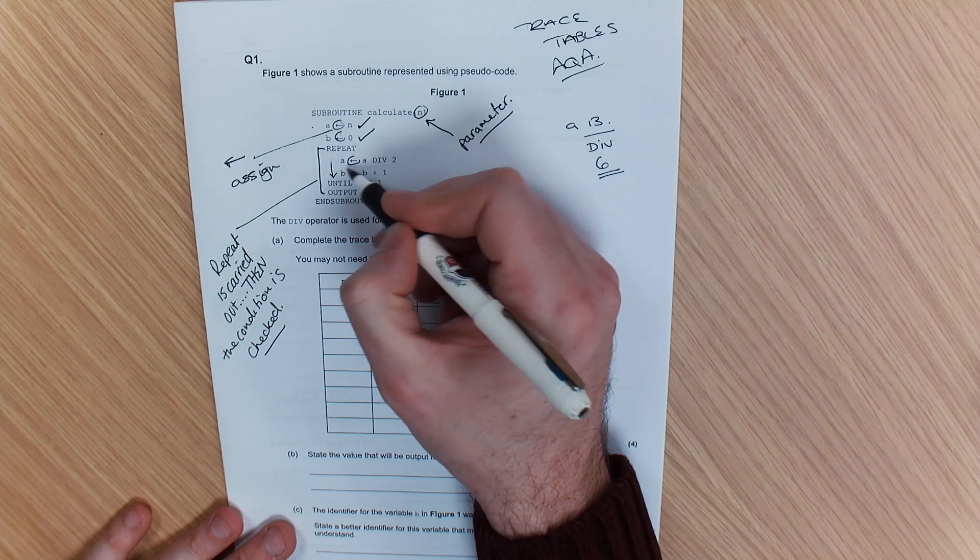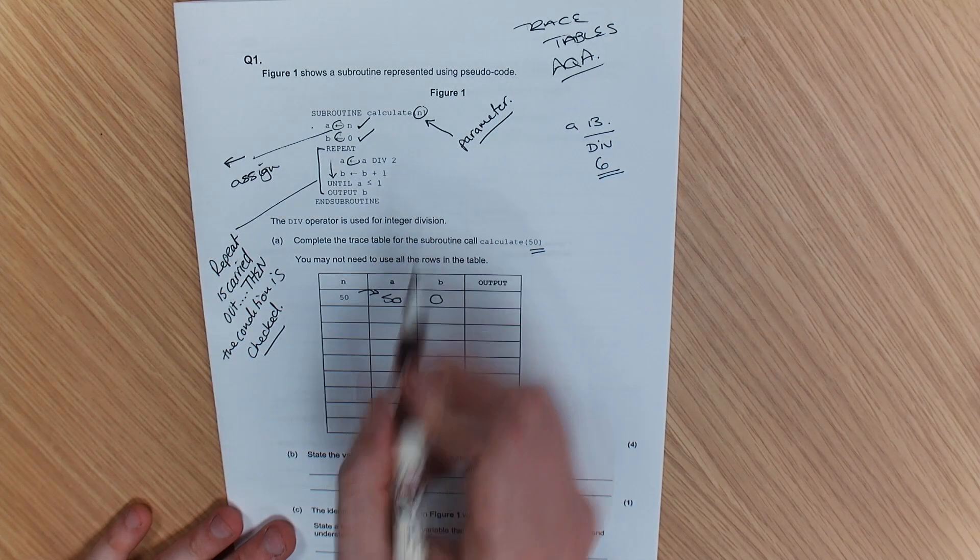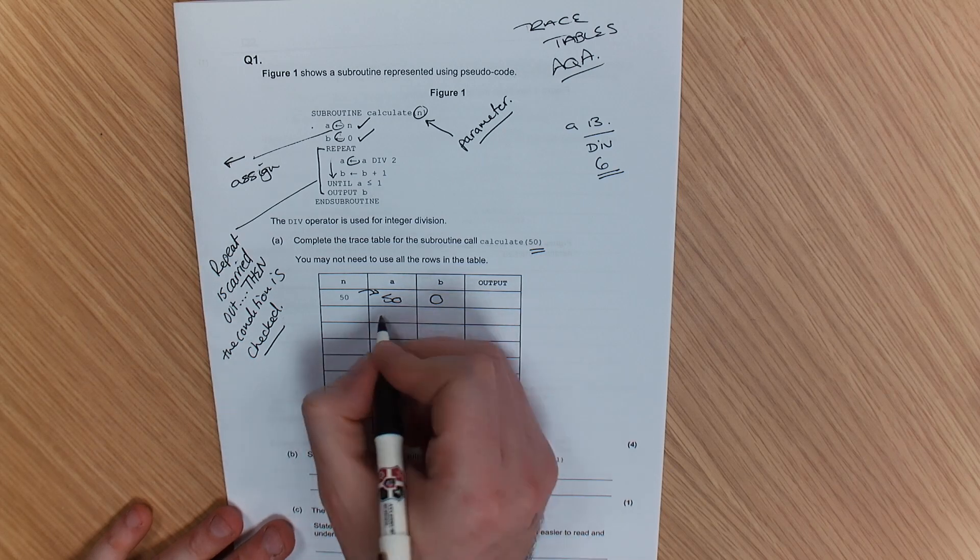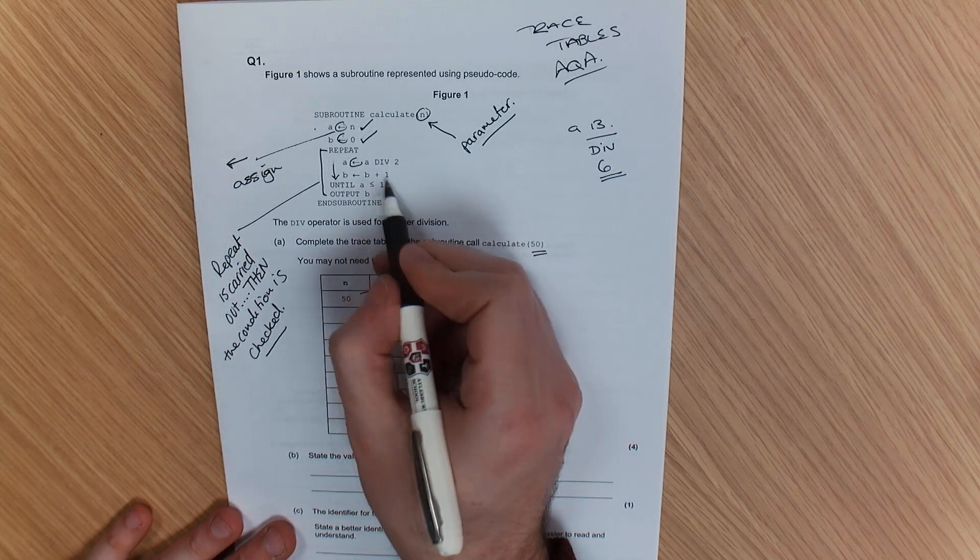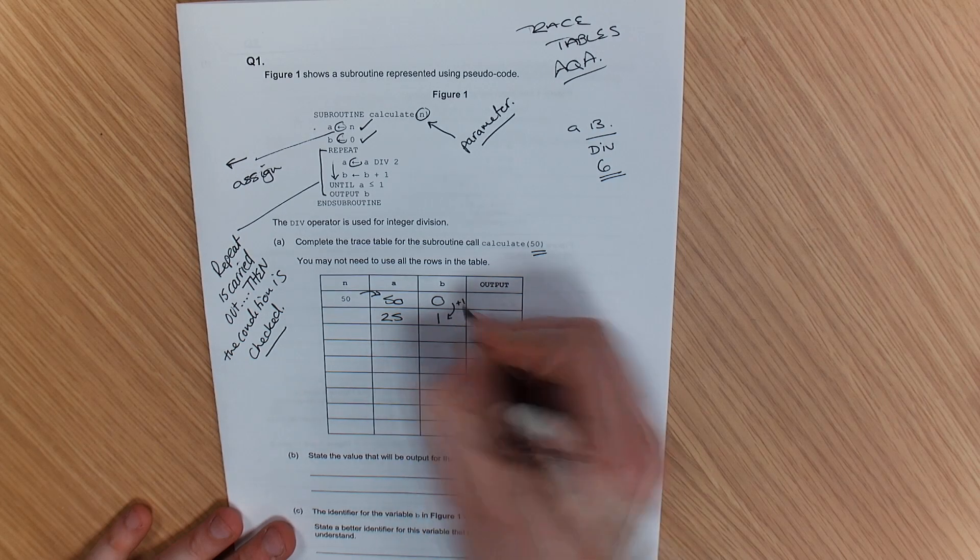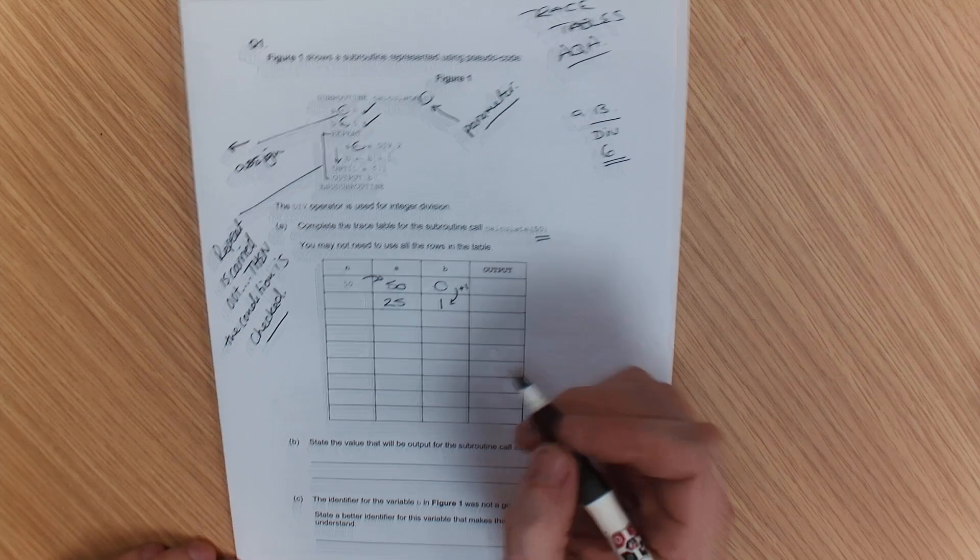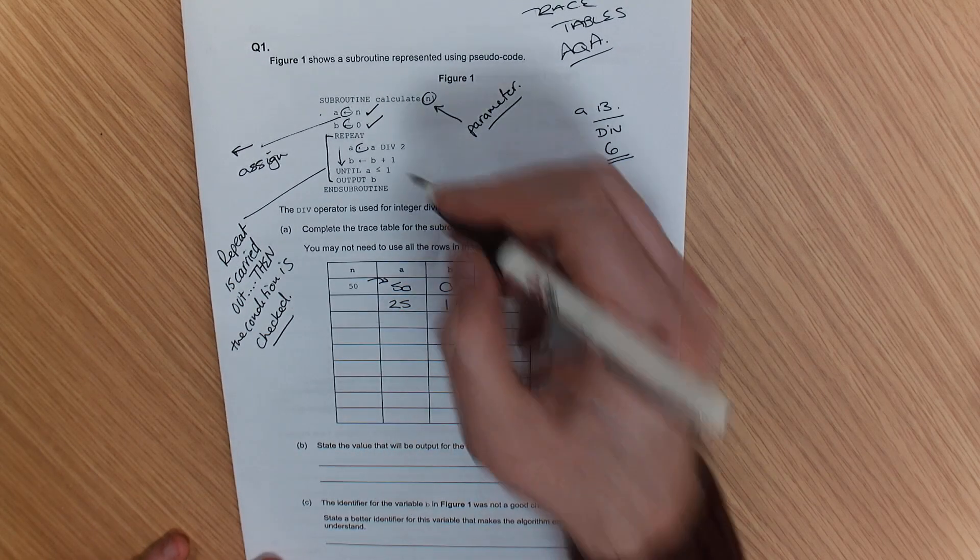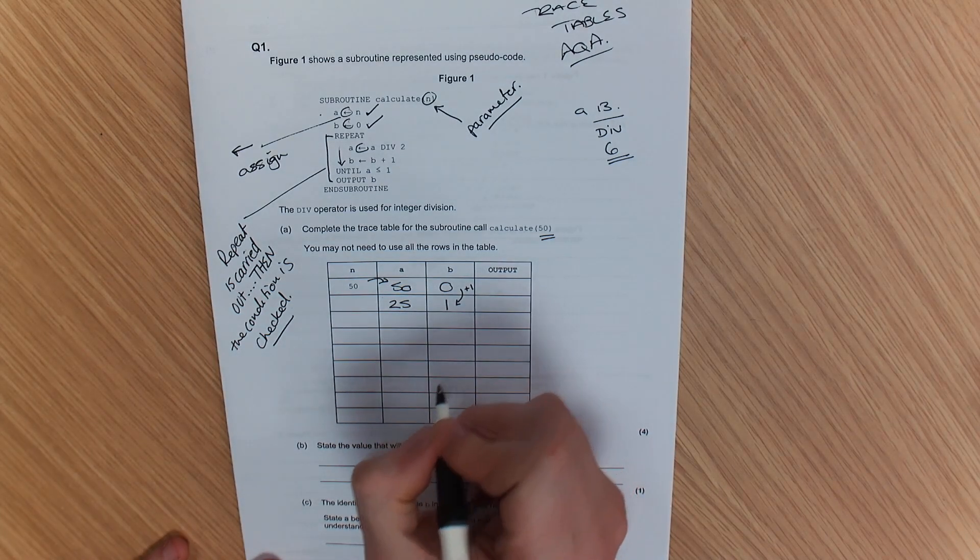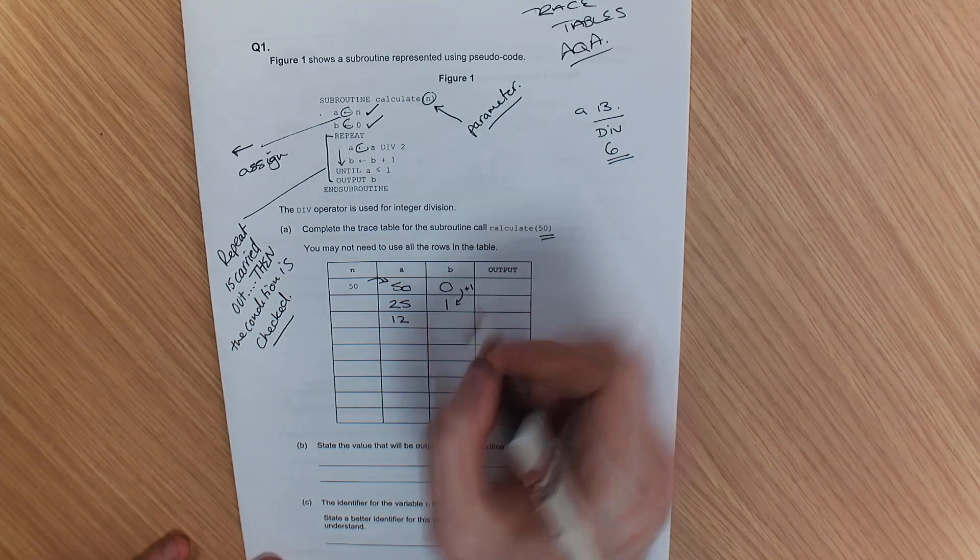Now again, the value A has been assigned. A div 2. This column is already used, so we need to go down 1, which is 25. B is B plus 1. So you can see that is plus 1 there. You don't necessarily need to do that. I'm doing this to help you understand how to do it. 25 div 2 is not 12.5. It is 12. And B goes up by 1.